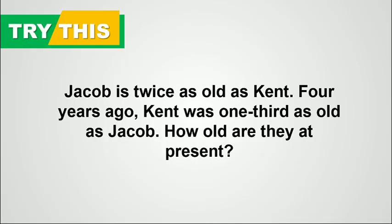Now I want you to try this age problem: Jacob is twice as old as Kent. Four years ago, Kent was one-third as old as Jacob. How old are they at present? Try to answer this and let me know your answer in the comment section below. That's all for now — thank you, more power, and let's keep learning.